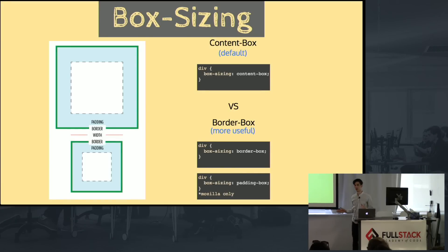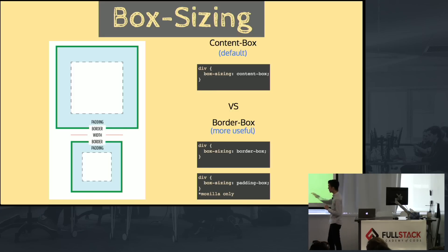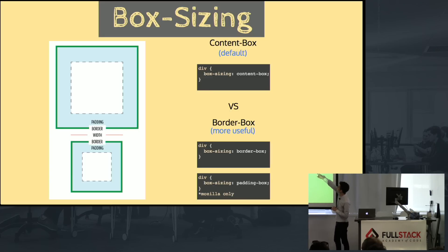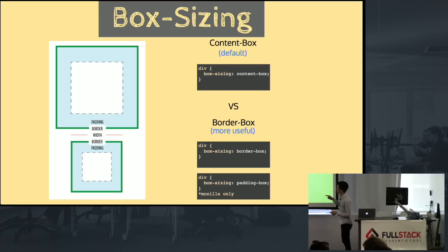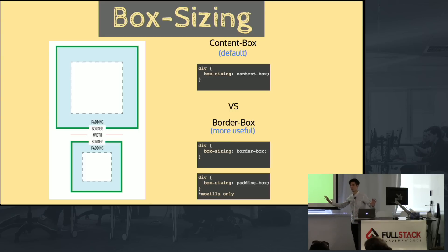So we know what a box is. Let's talk about how the box gets its size. The box-sizing property has two main types. Content-box is the default — if you set a size like 100 pixels or 10%, it's accounting for the content box, and everything else you've set extrudes out from that size. If you set it to border-box, it calculates the set size as the content, the padding, and the border, and the margin extrudes out from there.